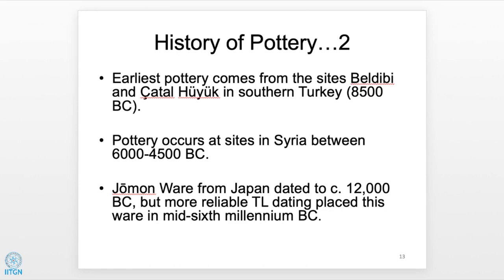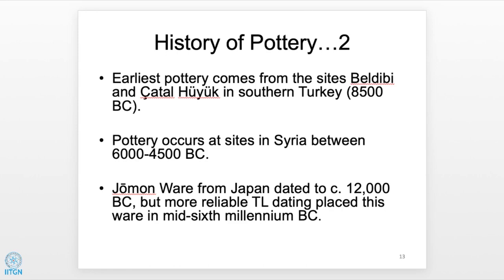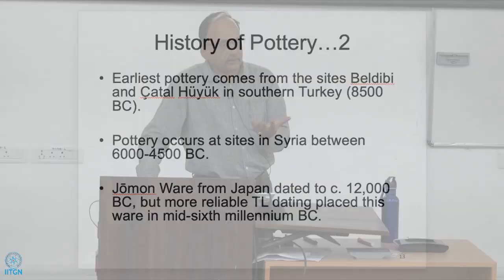Thermoluminescence dating is a method used to determine the age of pottery — that is an entirely different lecture. For the Indian subcontinent, the earliest evidence of ceramics is difficult to pin down. Gangavali may have had mesolithic-stage ceramics, but they may not have been baked, and unless baked they won't survive. That is the problem.